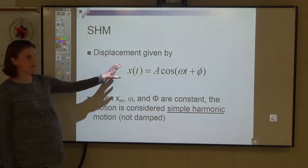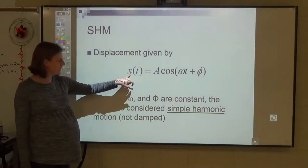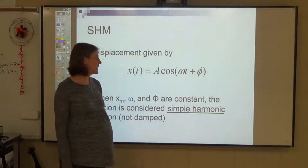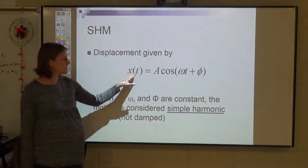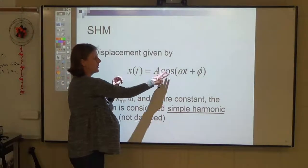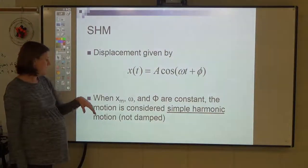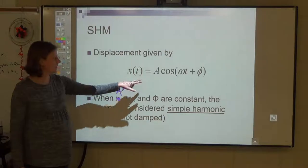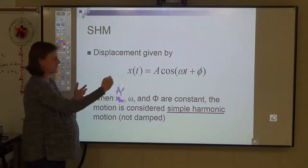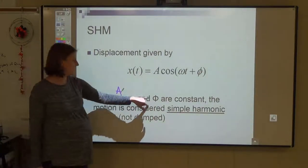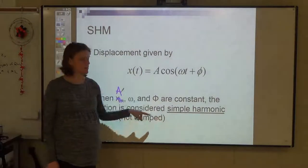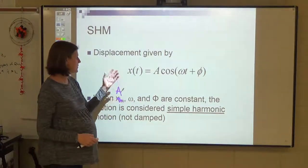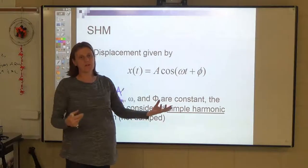The position function for a spring is x = A cos(ωt + φ). It makes sense that position for a spring, going back and forth, relates to a trig function. A is the amplitude — the maximum stretched position. If A, omega, and phi are constant, the motion is simple harmonic motion. Damped motion is when oscillations die out and the spring eventually stops — simple harmonic motion is an ideal, frictionless scenario where no energy is lost.